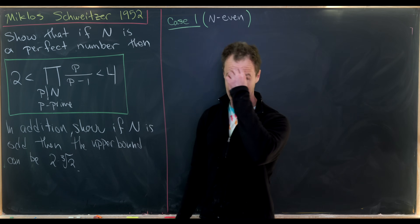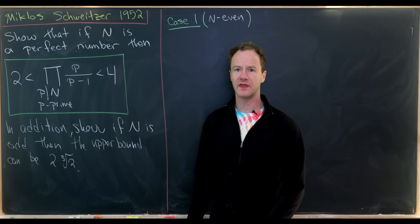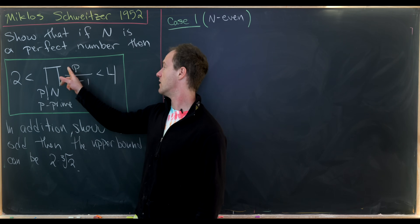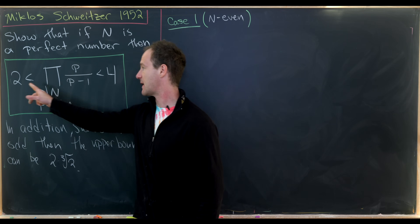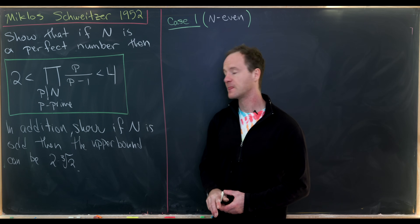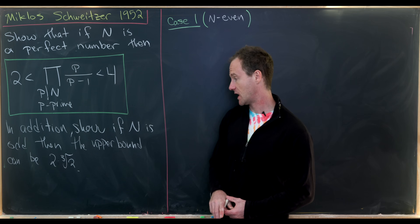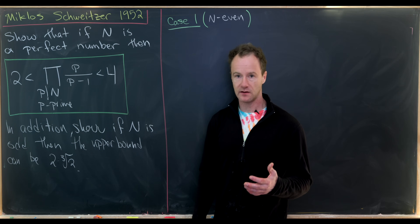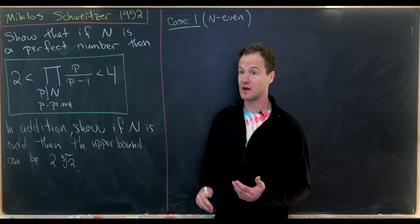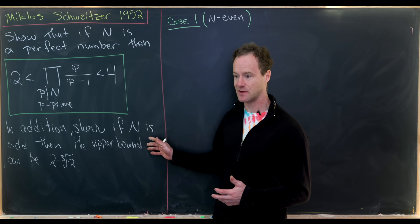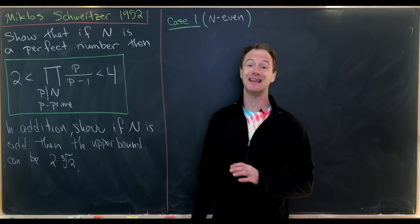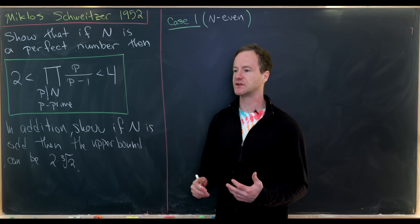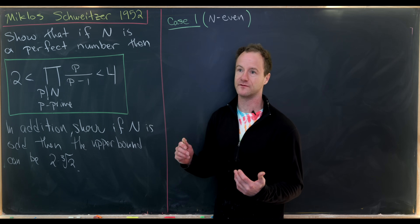We'd like to show that if N is a perfect number, then this product over all primes dividing N of p over p minus 1 is bounded strictly between 2 and 4. In addition, we will show that if N is odd, then this upper bound of 4 can be replaced with 2 times the cube root of 2. Those of you knowledgeable about perfect numbers might know this is quite interesting, because it is unknown if there are any odd perfect numbers at all. If there are, they have to be quite large — results say the smallest ones are on the order of 10 to the 53 or something.